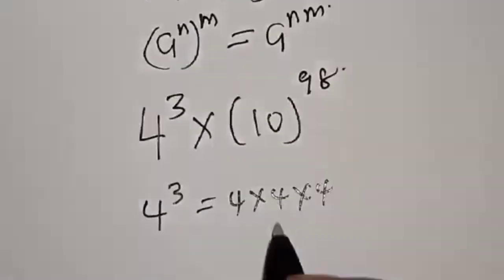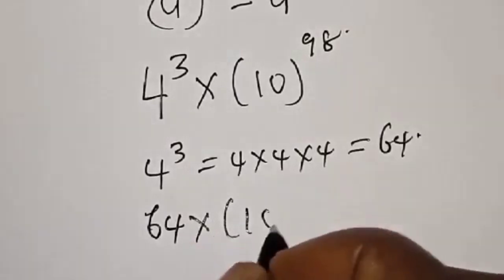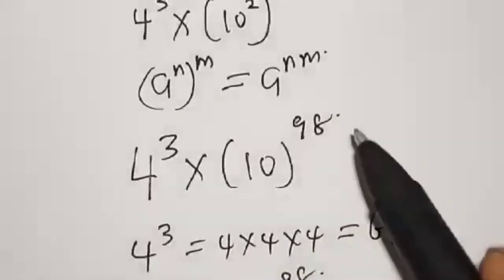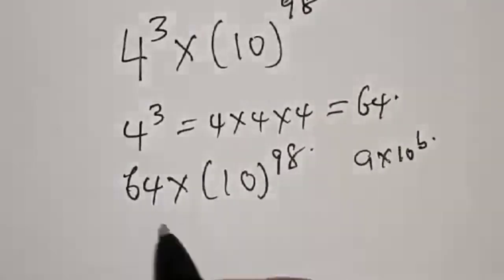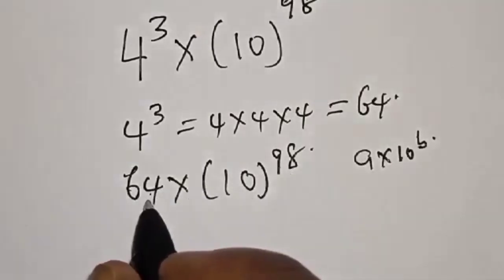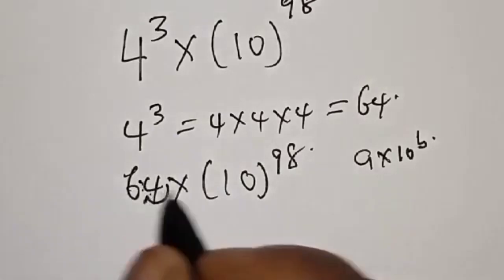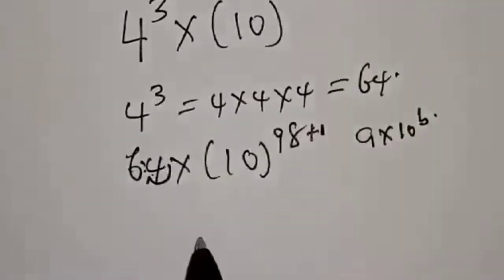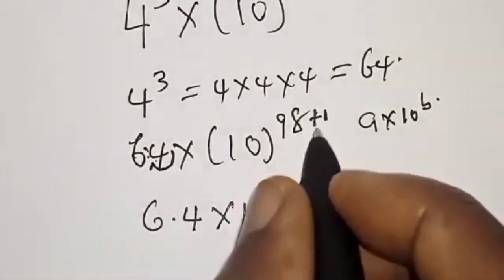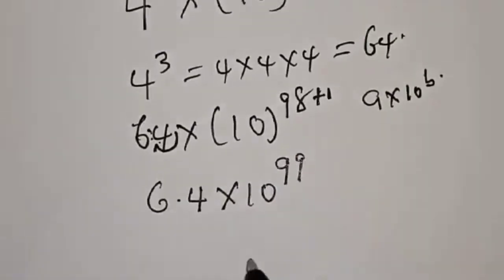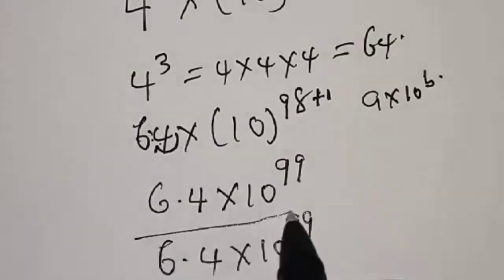4 raised to power 3 is 4 times 4 times 4, which equals 64. So we have 64 multiplied by 10 raised to power 98. Our answer is in the form a multiplied by 10 raised to power b. Shifting the decimal point: 64 becomes 6.4, and we add 1 to the exponent, giving 6.4 times 10 raised to power 99. That is our final answer.